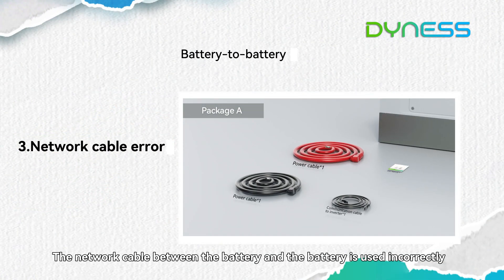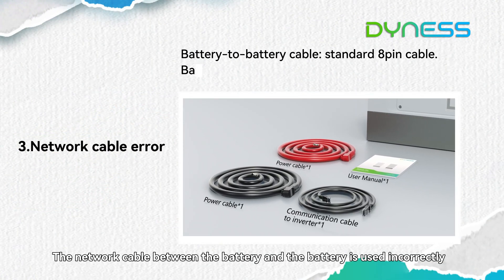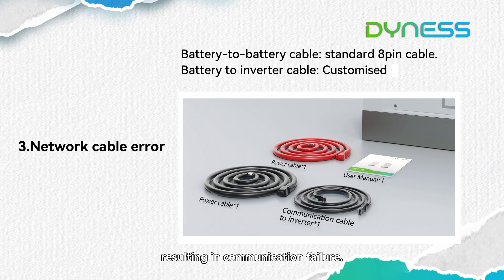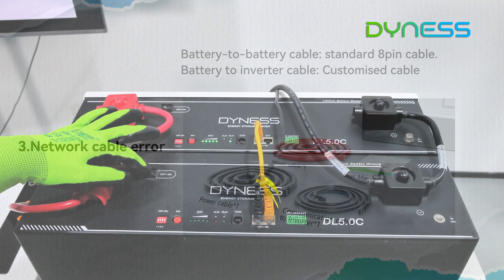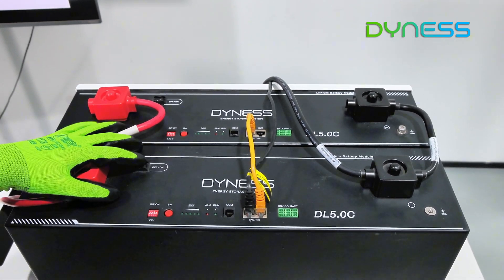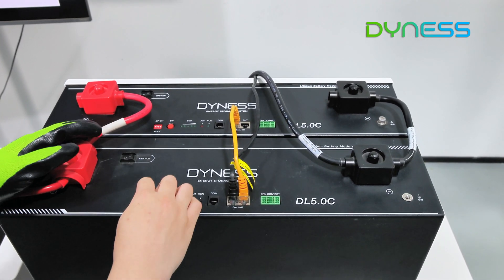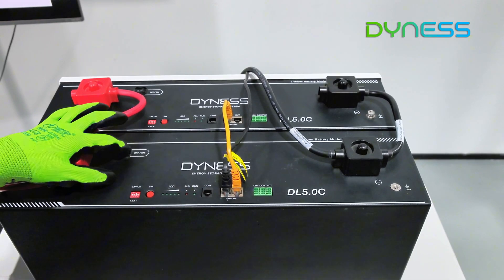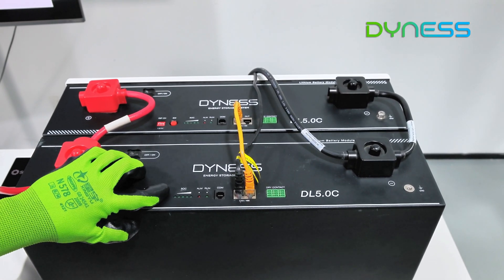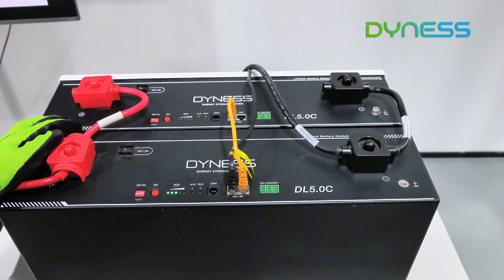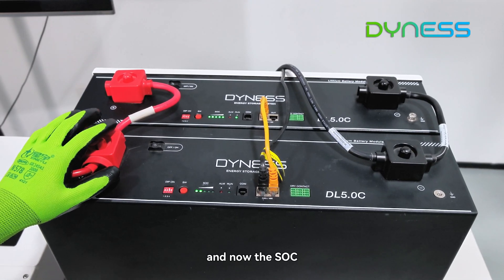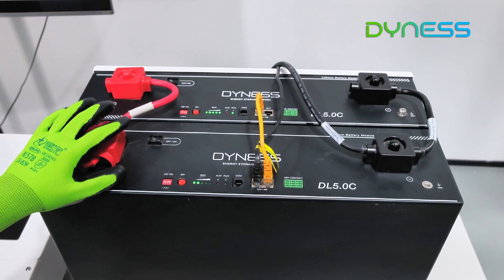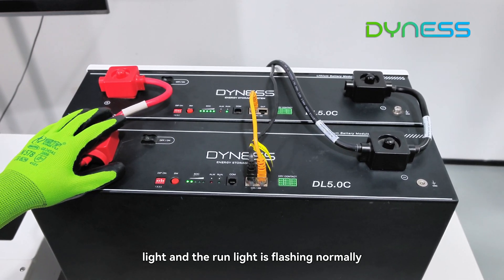The network cable between the batteries is being used incorrectly, resulting in communication failure. The solution is to refer to the product instruction manual and follow the wiring connection guidelines. After correcting the wiring, the SOC light and the RAN light will flash normally.